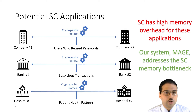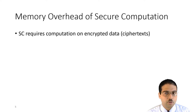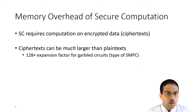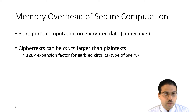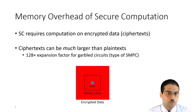We need to understand where secure computation's memory overhead comes from. Recall that secure computation is about computing on encrypted data, and in order to support computing an arbitrary function, the data has to be encrypted in a special way. For some secure computation schemes, the ciphertexts are much larger than plaintexts. For example, garbled circuits — a classical type of secure multiparty computation — require inputs and intermediate results to be encrypted in a way that makes them 128 times bigger than the plaintext data.